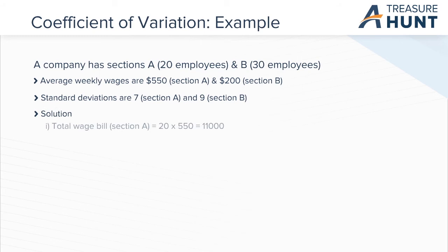Solution: Total wage bill for section A with 20 employees is equal to 20 times 550 equals $11,000. Wage bill for section B is equal to 30 times 200 equals $6,000. Section A is larger in wage bill.